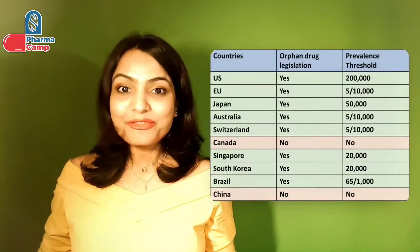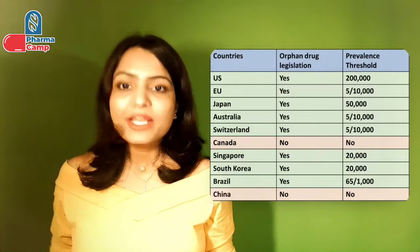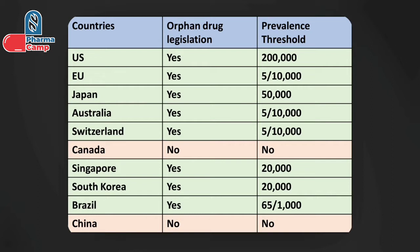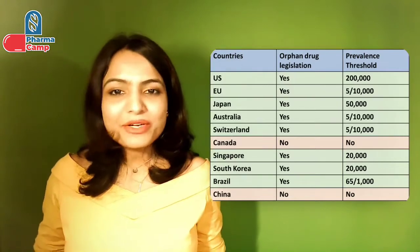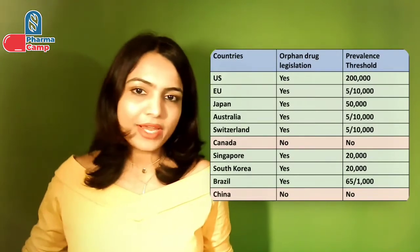Different countries have different prevalence thresholds — number of people, or in other words, occurrence of that disease — to decide if a disease is considered rare. In this figure, I've summarized different countries, whether they have an orphan drug law in place, and if yes, what prevalence threshold is defined. The US, Japan, Singapore, and South Korea use absolute numbers, while the EU, Switzerland, and Australia use proportions. So one disease can be rare in one country but not in another, and it must meet individual country prevalence thresholds to qualify.